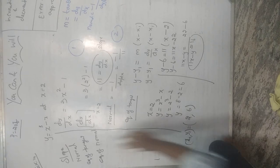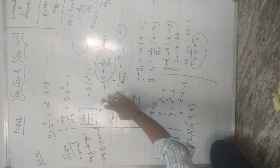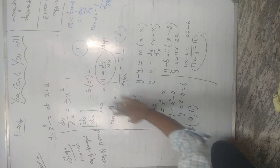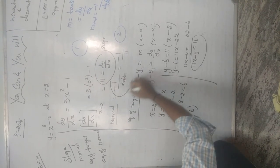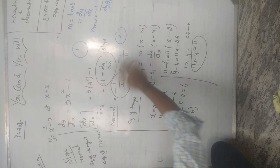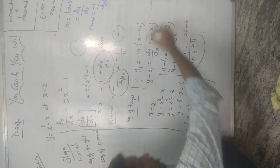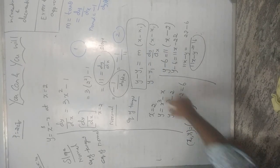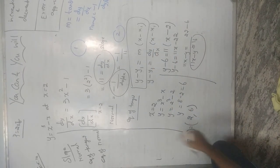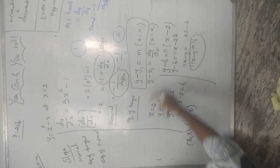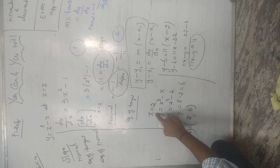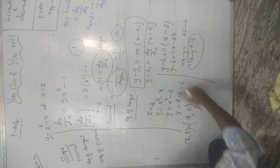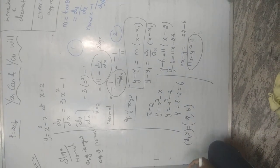To summarize the method: differentiate once, substitute the given point to find dy/dx as the slope, the normal is −1/(dy/dx). For the equation of tangent, apply the formula y − y₁ = m(x − x₁), substitute dy/dx for m. If y₁ is unknown, substitute x₁ into the original equation to find y₁. Then substitute all values to get the equation of the tangent.